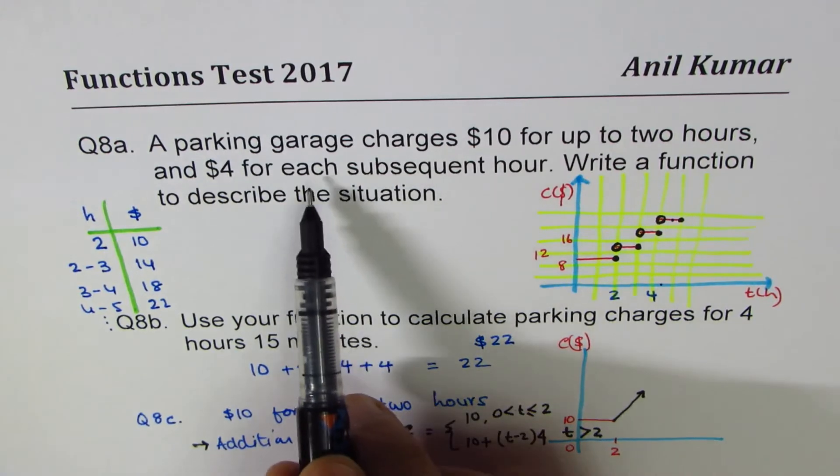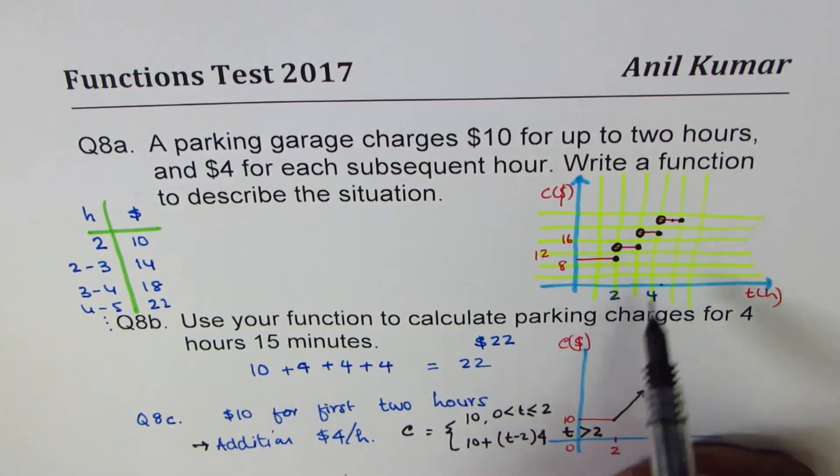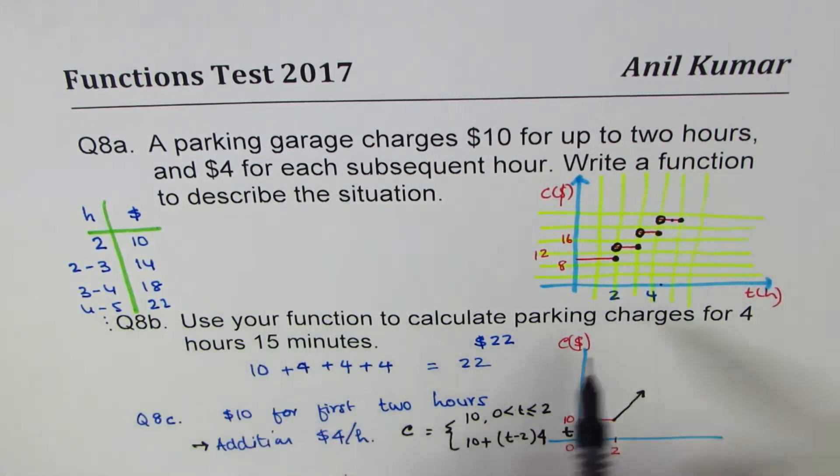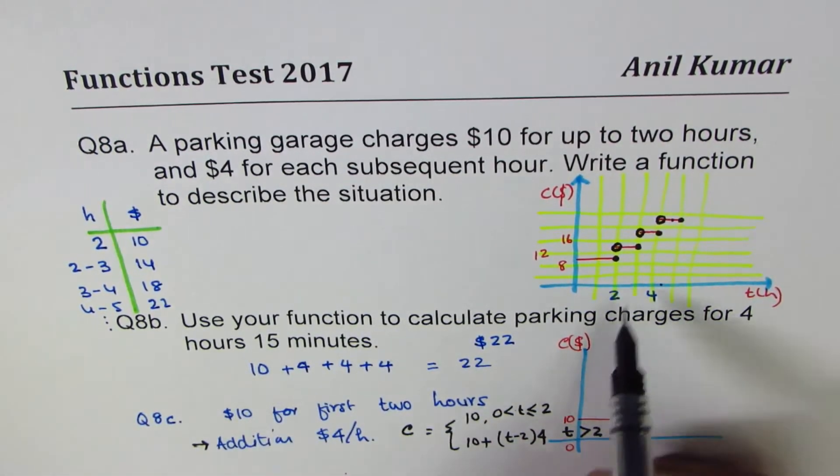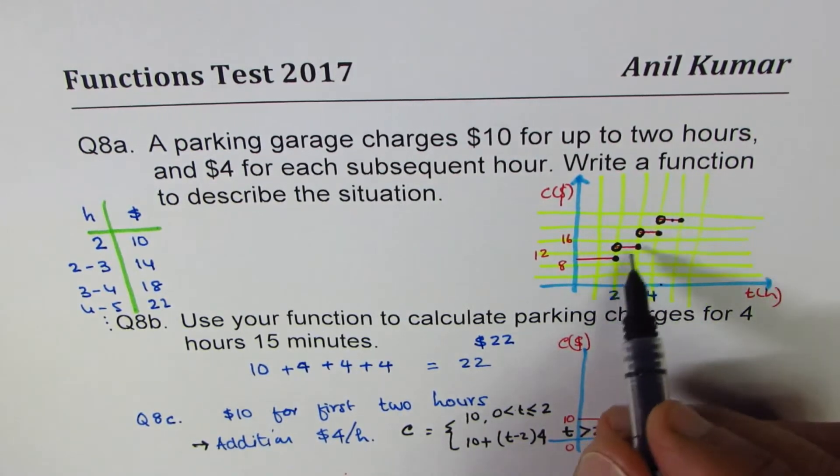However, if I have each subsequent hour, then the function is like this. So if it is 4 point something, it will be considered as 5 times. So you have to round higher.